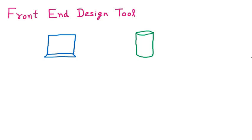First of all we should understand that whenever we are making any application on our system, that is called a Windows application. There are different types of applications which we can develop, just like we are having the web application. Web application means whenever we have a browser — let's say Chrome or Safari — and we are opening some website, then developing that website is called the web application.